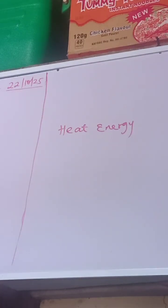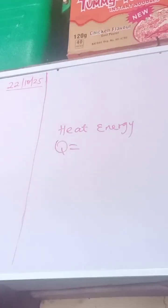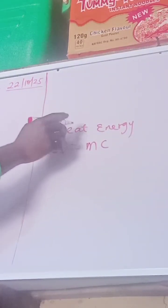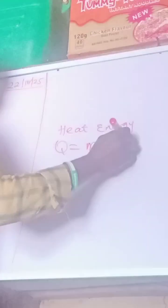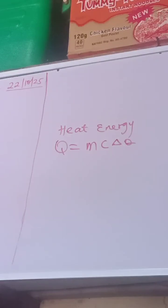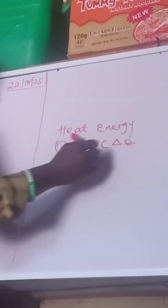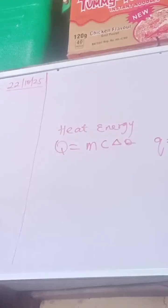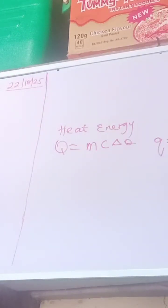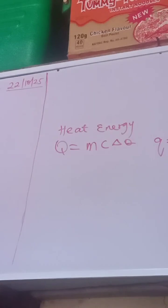Remember the formula: quantity of heat. This formula involves temperature and specific heat capacity. Specific heat capacity — let's note the formula for heat capacity.